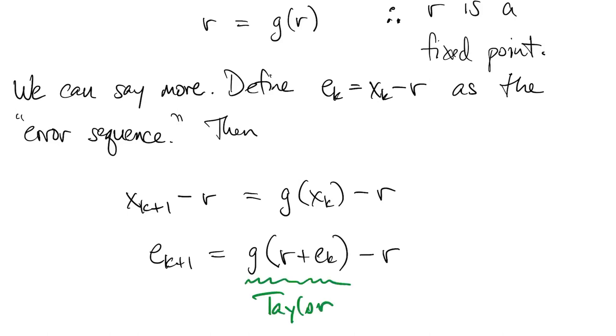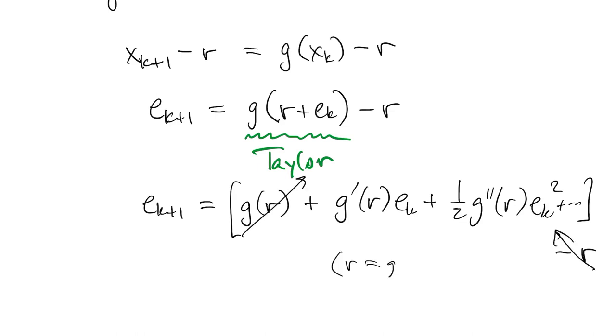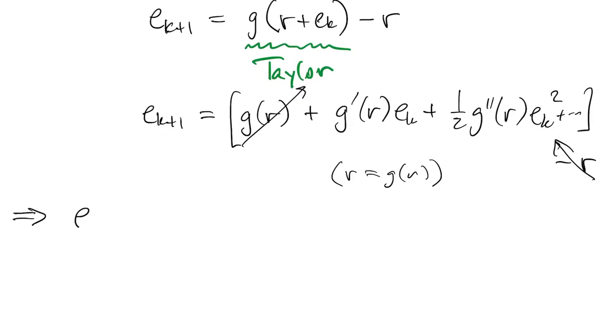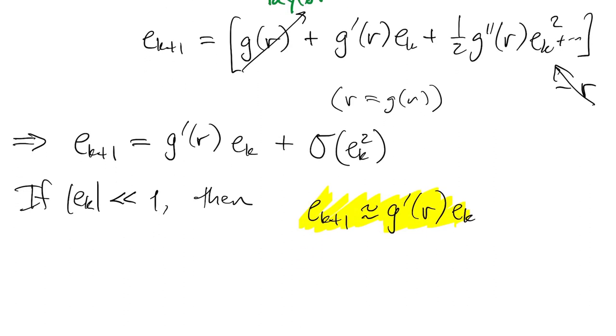This g value we're going to apply Taylor's theorem to. So we expand around the point r. And then since r is a fixed point, we know that g of r and r cancel out. So what we're left with is that the error at step k plus one is g prime of r times the error at step k plus some higher order terms. And if the error is small, then we can ignore those higher order terms because squaring them makes them even smaller.